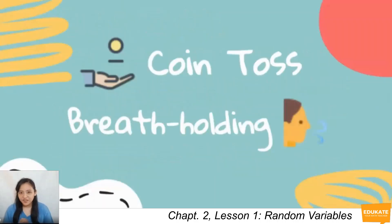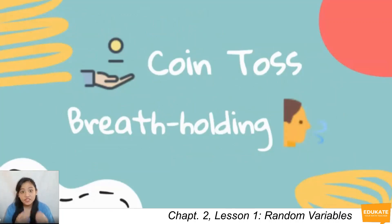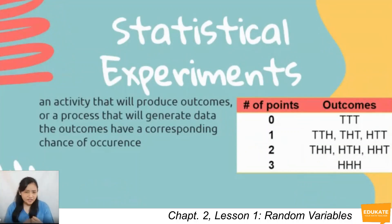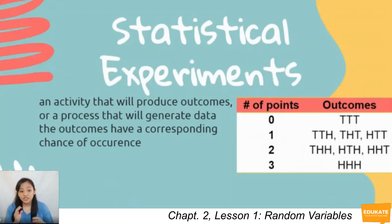On your modules, there is a coin toss and breath-holding activity that you must do first before going into this lesson. You can pause the video now and do these activities first before going on. Those two activities are what we call statistical experiments. A statistical experiment is an activity that will produce outcomes or a process that will generate data. These outcomes have a corresponding chance of occurrence.